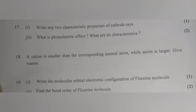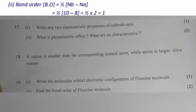Question 19.2: Find the bond order of the fluorine molecule. Answer: Bond order = ½(Nb − Na) = ½(10 − 8) = ½ × 2 = 1.